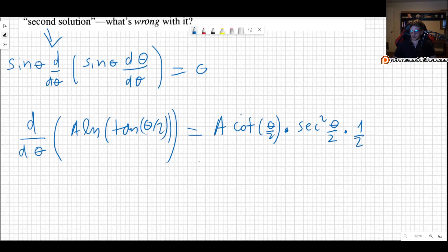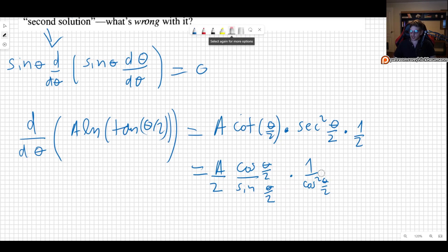So here we can simplify this a little bit more because cotangent is simply cosine divided by sine of theta over 2, and we multiply this by 1 over cosine squared of theta over 2, and this is divided by 2. So we get that one of the cosines will simplify, so we get simply 1 over sine of theta over 2 times cosine of theta over 2.